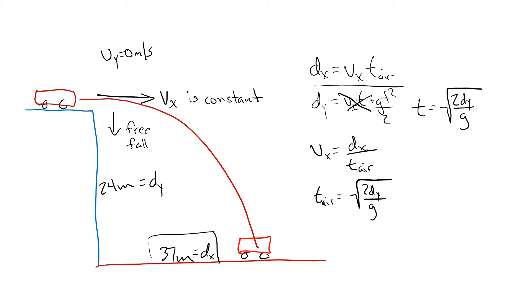So after we've isolated, we go and plug our values in. We do 2 times 24 meters divided by 10.0 meters per second squared.